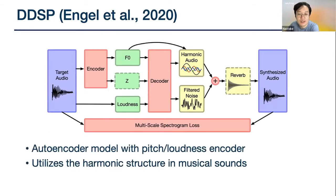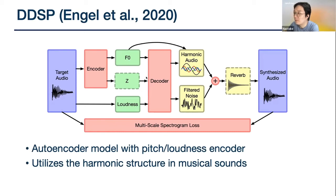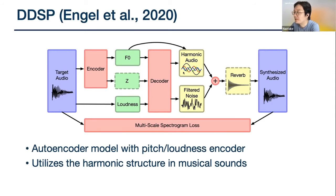Now I'll go into DDSP. You might already be aware of it — Google and some other companies have announced DDSP plugins, and Newton also has DDSP. DDSP is also an autoencoder model with a pitch and loudness encoder. What's different about DDSP is that it utilizes the harmonic structure in musical sounds. The decoder outputs parameters for an additive synthesizer and a noise synthesizer, and both outputs are added together with reverb to synthesize the audio.